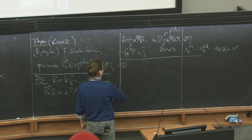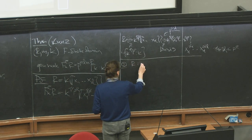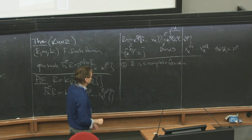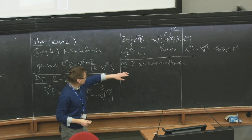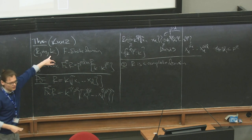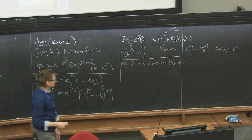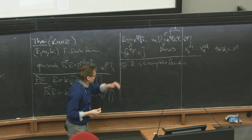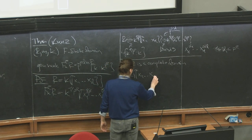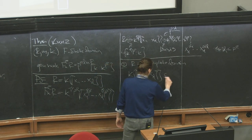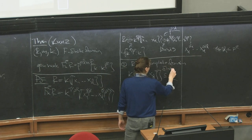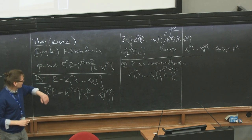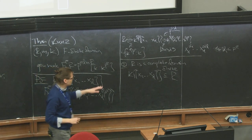Now let's go a little further. Let's assume R is a complete domain, not necessarily regular. If I take a system of parameters, by the Cohen structure theorem R contains its coefficient field, and the subring generated by the system of parameters is isomorphic to a power series ring of the same dimension. So I can find a power series ring inside R as a finite extension.